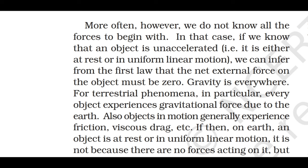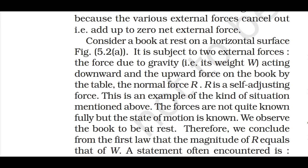Gravity is everywhere. For terrestrial phenomena in particular, every object experiences gravitational force due to the earth. Also, objects in motion generally experience friction, viscous drag, etc. If then, on earth, an object is at rest or in uniform linear motion, it is not because there are no forces acting on it, but because the various external forces cancel out, that is, add up to zero net external force. Consider a book at rest on a horizontal surface. It is subject to two external forces: the force due to gravity acting downward, and the upward force on the book by the table — the normal force R. R is a self-adjusting force. The forces are not quite known fully, but the state of motion is known. We observe the book to be at rest.